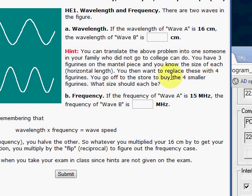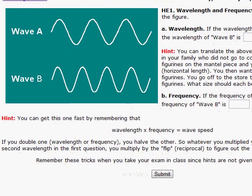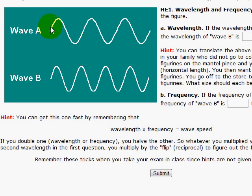You then want to replace these with four figurines, so you go to the store to buy four smaller ones, and what size should you be looking for? So, here you have the three figurines. One starts here, ends there. It's one wavelength.